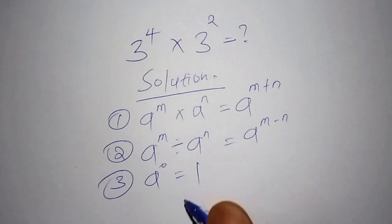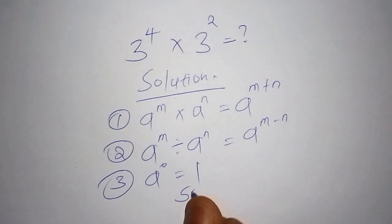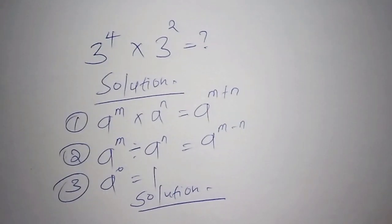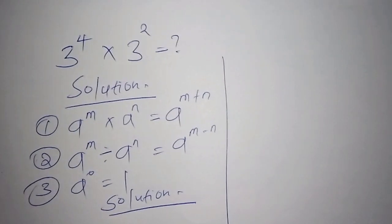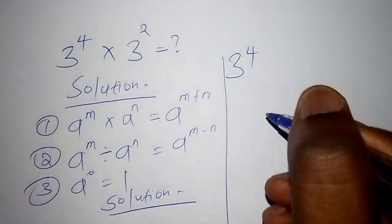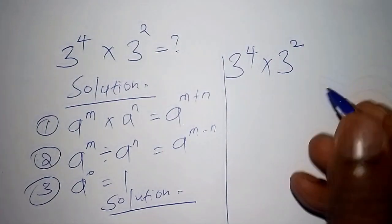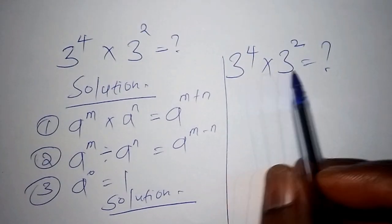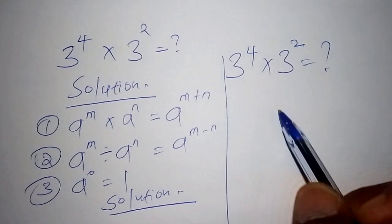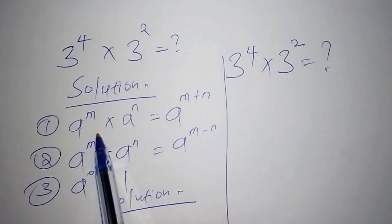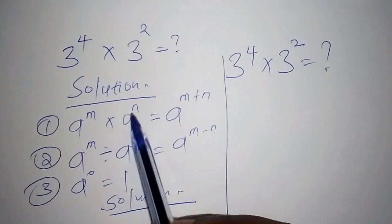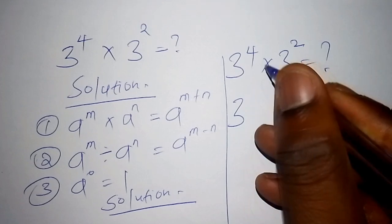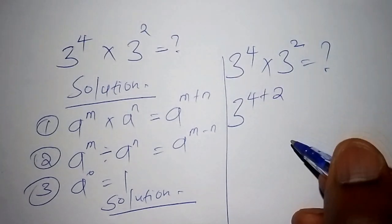Let's now move to the solution. We have the math problem: 3 to the power 4 multiplied by 3 to the power 2. In this case, the bases — which we call the roots — are the same, so the powers are the ones that differ. Applying Law 1, a to the power of m multiplied by a to the power of n equals a to the power of m plus n, so this becomes 3 to the power of 4 plus 2.